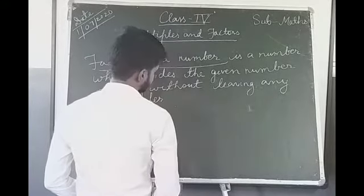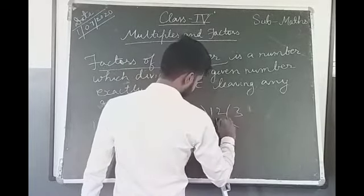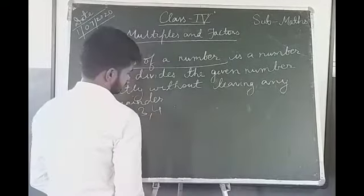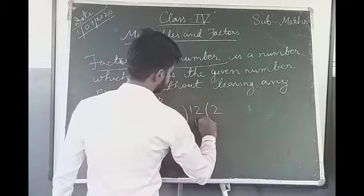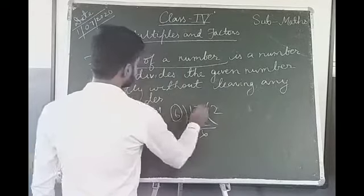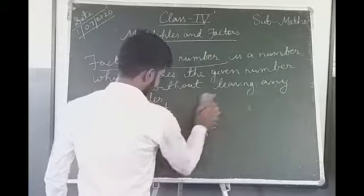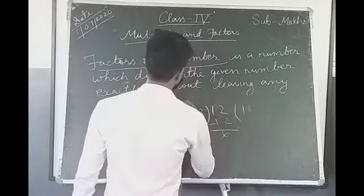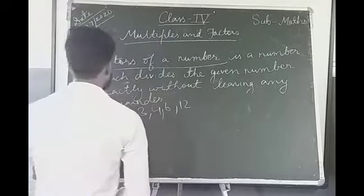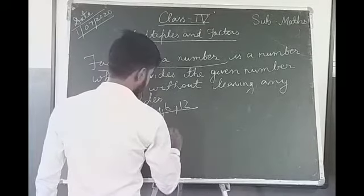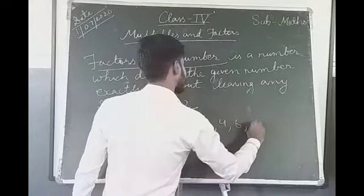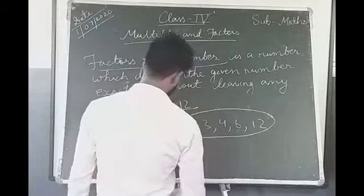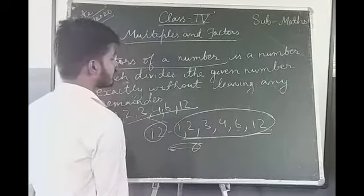12 is also divisible by 4, so 4 is also a factor of 12. Next, 2 into 6 that is 12, so 12 is also divisible by 6, and 6 is also a factor. 12 divided by 12 is 1, so 12 is also a factor. So the factors of 12 are 1, 2, 3, 4, 6 and 12. These are the numbers when we divide into 12 and get remainder 0, so these are the factors of 12.